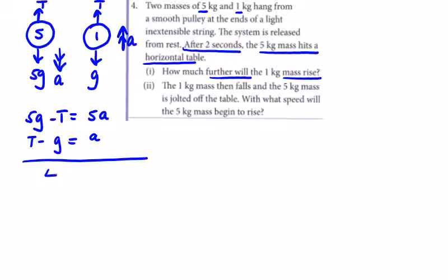The difference between the weights, 4g, equals 6a (the sum of the masses). So a = 4g/6 = 2g/3 m/s².